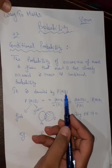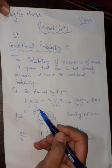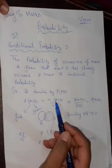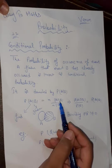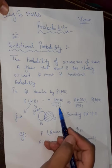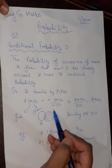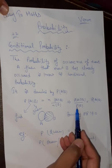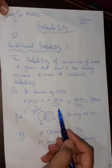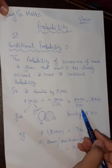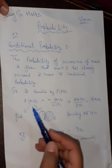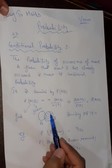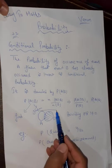Now let us go to the formula. The direct formula: the probability of A given B is equal to the probability of A intersection B divided by the probability of B. We can use N or P — it is one and the same thing. We are finding event A given that event B is already given.